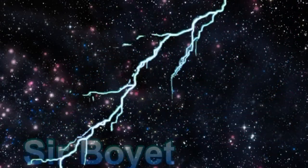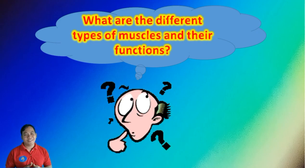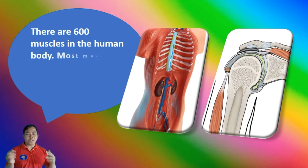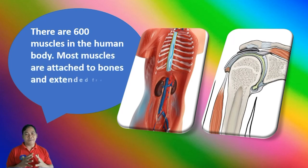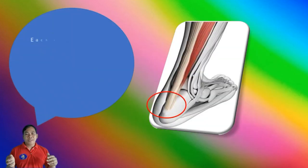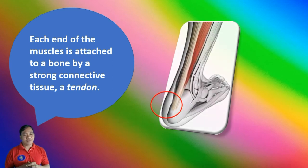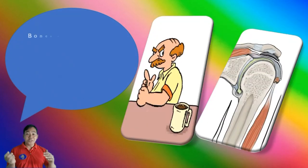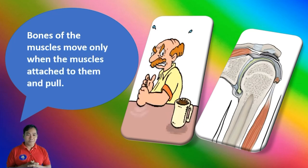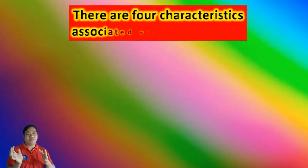What are the different types of muscles and their functions? There are 600 muscles in the human body. Most muscles are attached to bones and extend from one bone to another. The end of the muscles is attached to a bone by a strong connective tissue called a tendon. Bones of the muscles move only with the muscles attached to them, and pull.